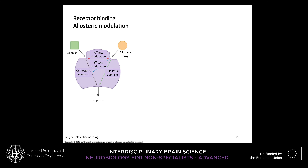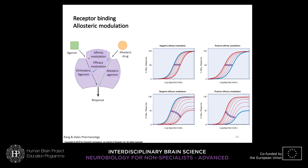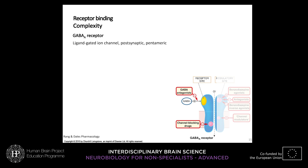The curves one can get with allosteric modulators show that when they modulate the agonist they can produce negative affinity modulation — displacing the curve to the right — or positive affinity modulation, displacing it to the left. The same can happen with efficacy. This gives you an idea of how complex receptor binding can be.